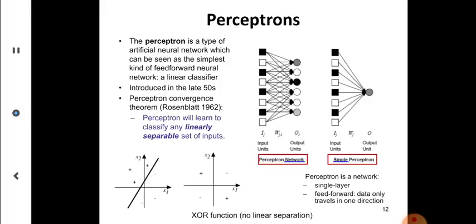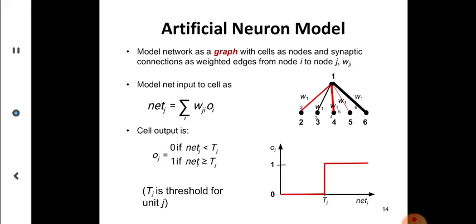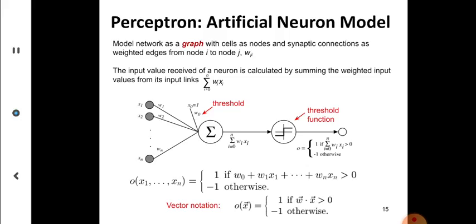This is a single layer perceptron. Single layer perceptron is a type of artificial neural network which can be seen as the simplest kind of forward neural network, a linear classifier. Here's an example of how motion tracking and other things can be done using artificial neural networks. Model network as a graph with cells as nodes and synaptic connections as weights at edges. For example, you can see a lot of inputs coming. Model net input to cell is the weight multiplied by each input, and the output is an activation function. We use a square function here.